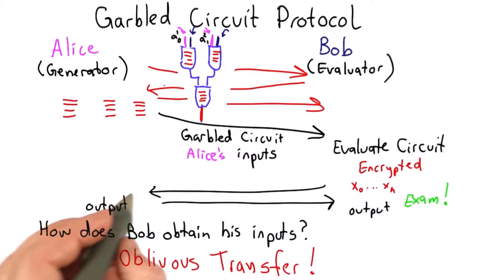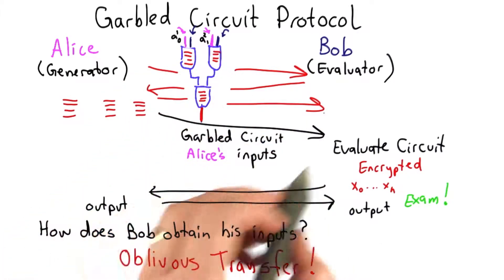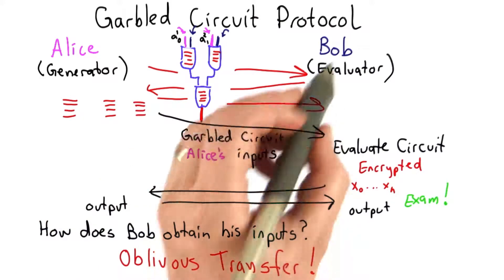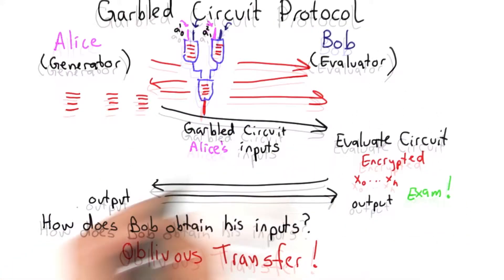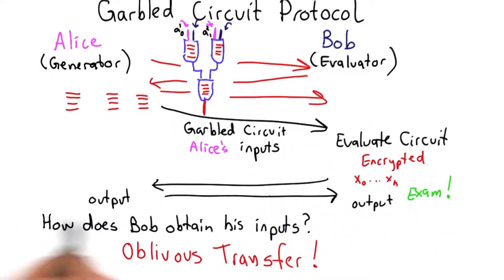To enable Bob to learn his inputs to the circuit, Alice sends the garbled circuit along with her inputs. Bob can evaluate the circuit, and then from the encrypted output wires, Bob can obtain the result of the circuit execution.